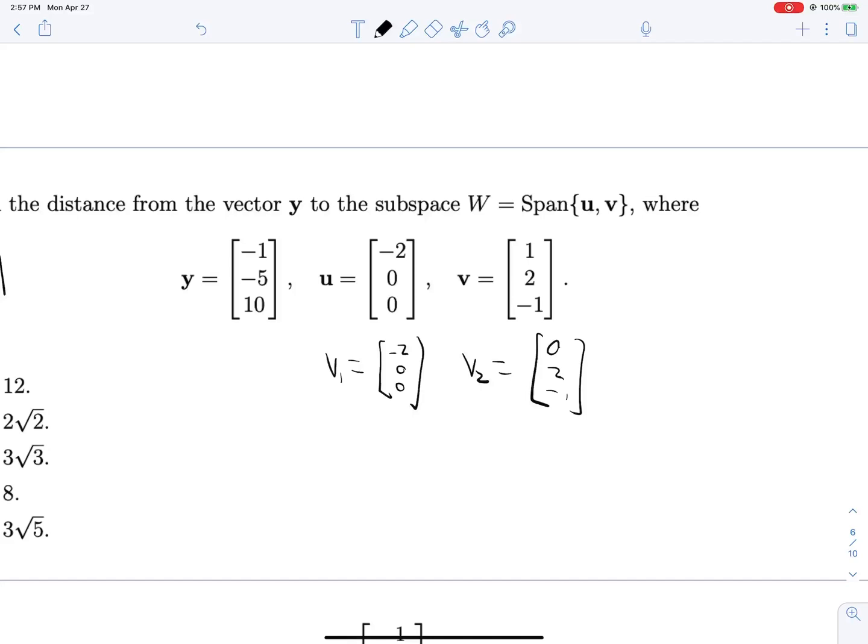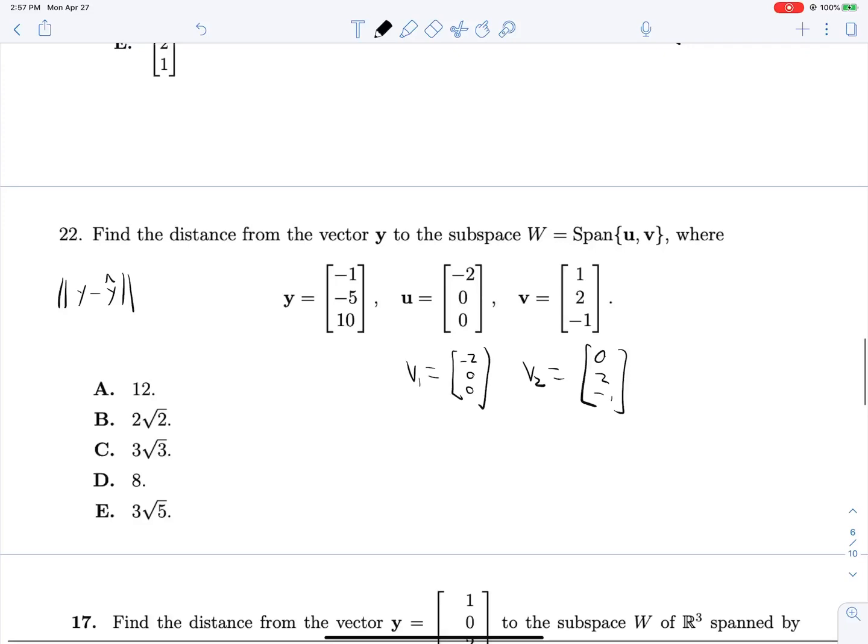Now we can get going. Now that we have things in this form, we can apply this formula. So Y minus Y hat is the same as computing Y, negative 1, negative 5, 10, minus Y's projection onto this new V1 that we have here, which is really the same as U, but whatever, which is 2. We're dividing by V1 dot V1, which is 4, multiplied by V1, negative 2, 0, 0. This becomes plus 1 half, so plus 1, we'll get a 0 there. And then we're subtracting V2 dot Y, that's negative 20, divided by V2 dot V2, which is 5. This becomes plus 4, multiplied by V2, 0, 8, negative 4. I'm factoring that in.